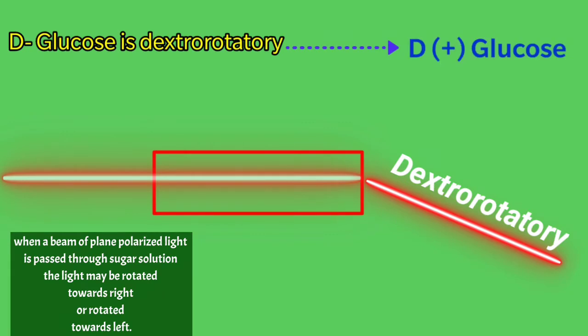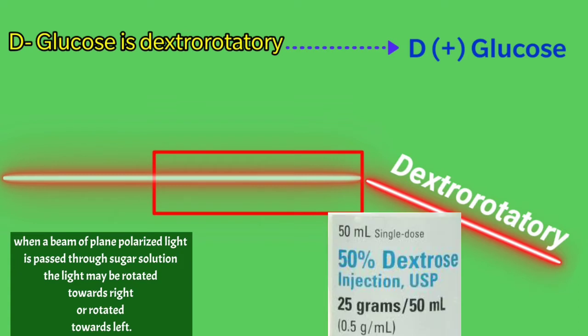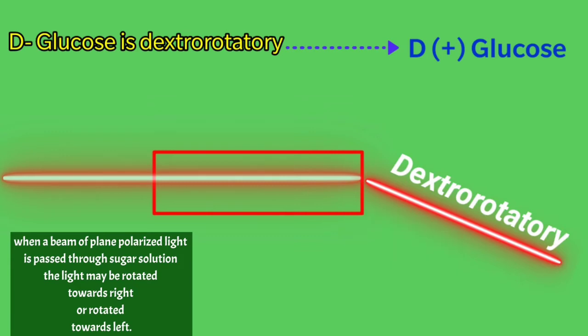In medical practice, dextrose is used to treat low blood sugar levels or water loss without electrolyte loss. So whenever you say dextrose, it means glucose solution. This is because glucose is dextrorotatory, that's why it is named as dextrose.